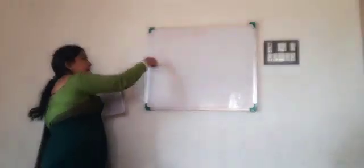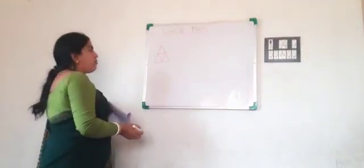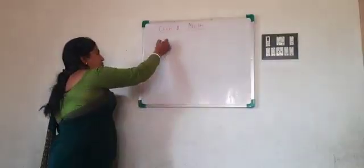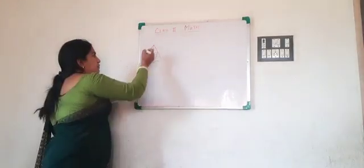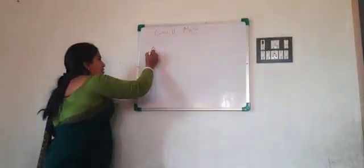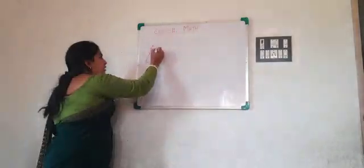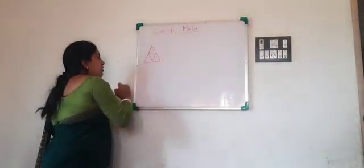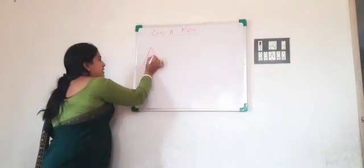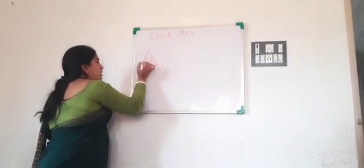So, how many triangles are there? Can you count? How many triangles are there? So, this is one triangle whole. And this is one. Two.